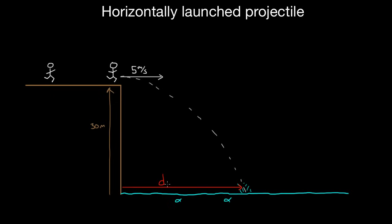This is a classic problem. It gets asked all the time. And if you were a professional cliff diver, you might want to know, for this cliff height and this speed, how fast do I have to run in order to avoid the rocky shore right here? Maybe there's a craggy cliff bottom that you can't fall on. So how fast would I have to run in order to make it past that?